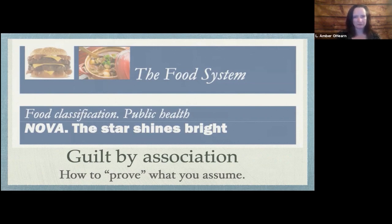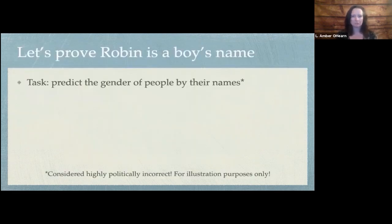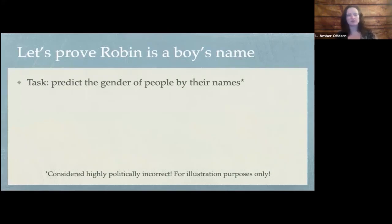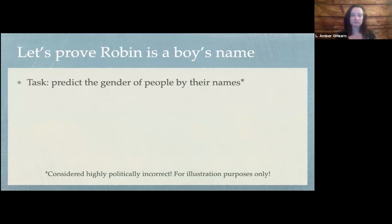Let's go through an example first of how this works. We're going to prove that Robin is a boy's name. In case you don't know, in English, Robin is a popular name both for girls and for boys. So suppose we have a task: we want to do something terrible like make an algorithm to predict what pronoun someone prefers to use based on his or her name.